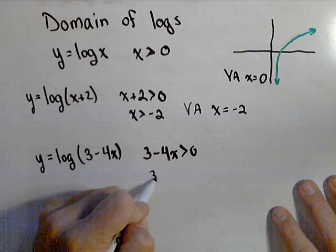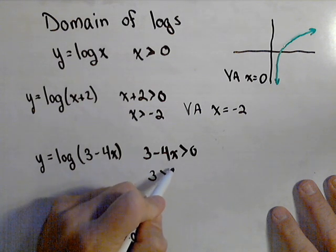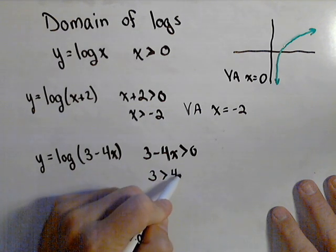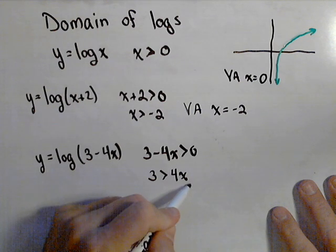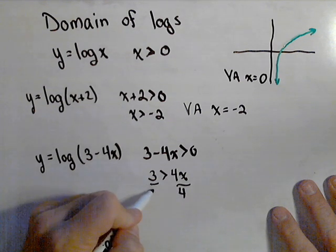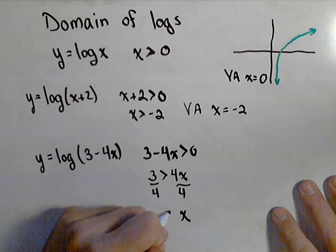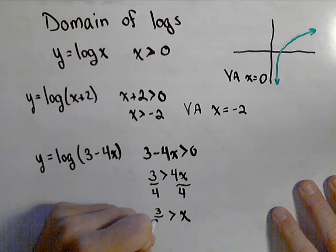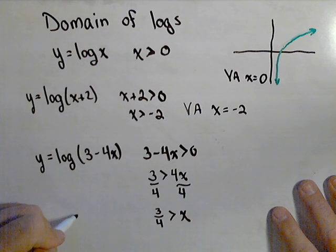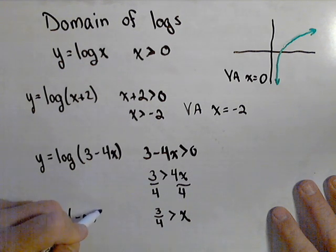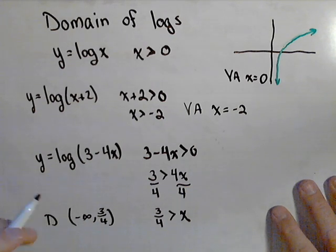That means we need three. We're going to add four x to both sides to be greater than four x. And now divide both sides by four. And we get that x has to be less than three-fourths. Or if we wanted it in interval notation, it would be negative infinity to three-fourths, not including three-fourths.